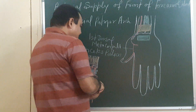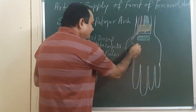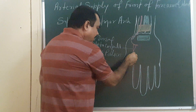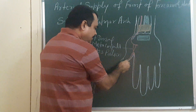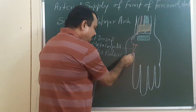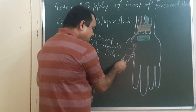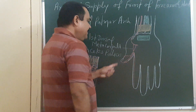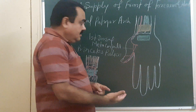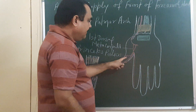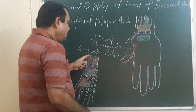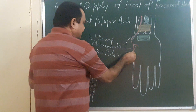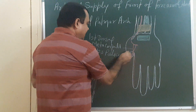It gives a branch known as princeps pollicis. Here it divides and gives medial and lateral digital branches, supplying both sides of the thumb. So this is princeps pollicis.